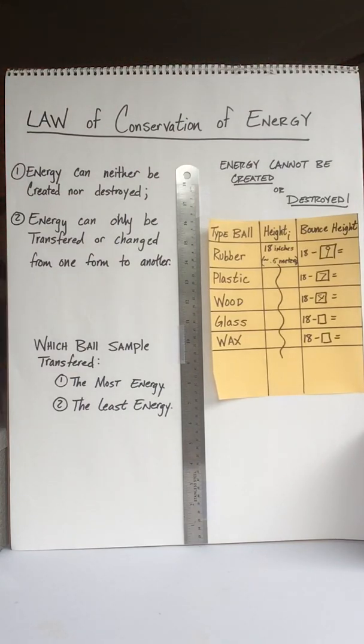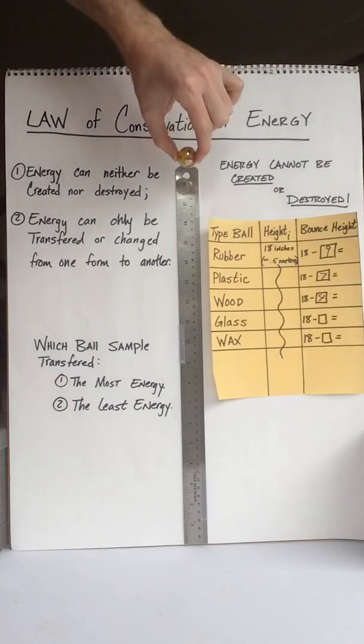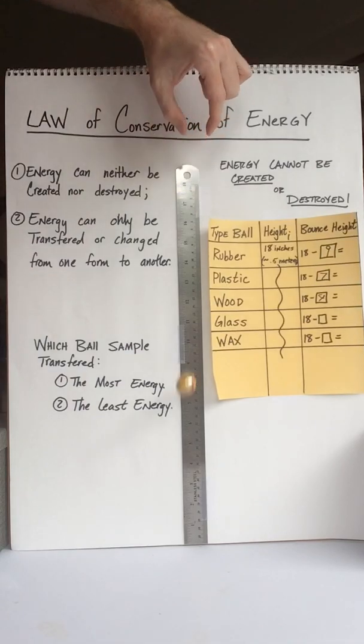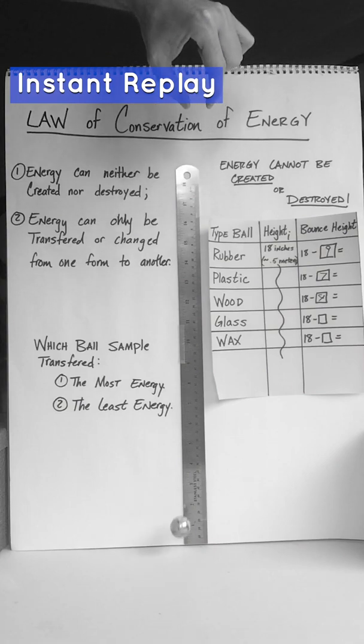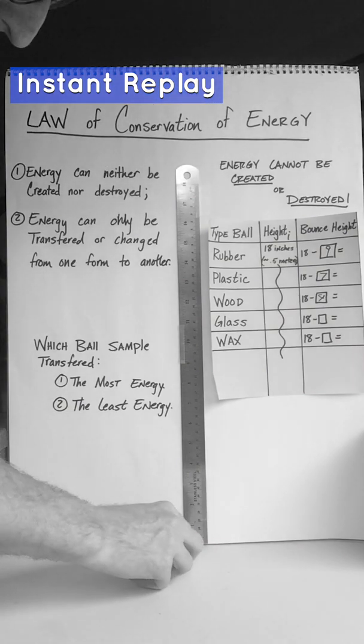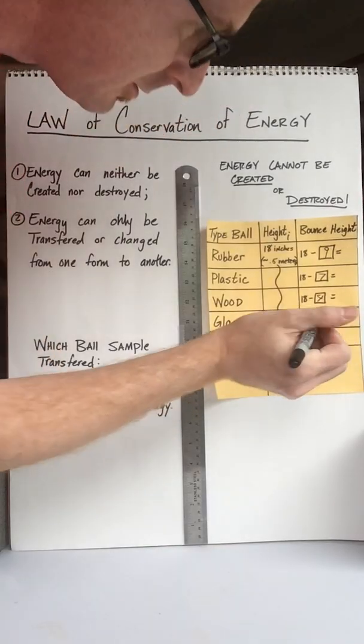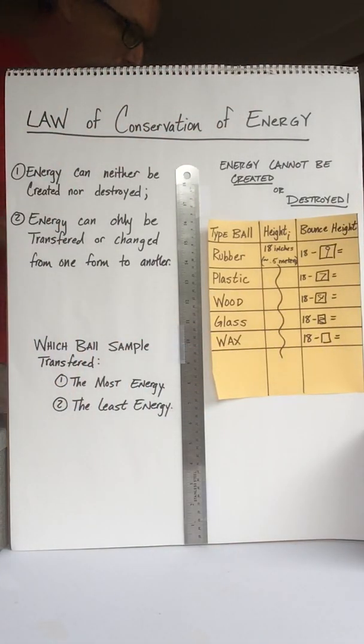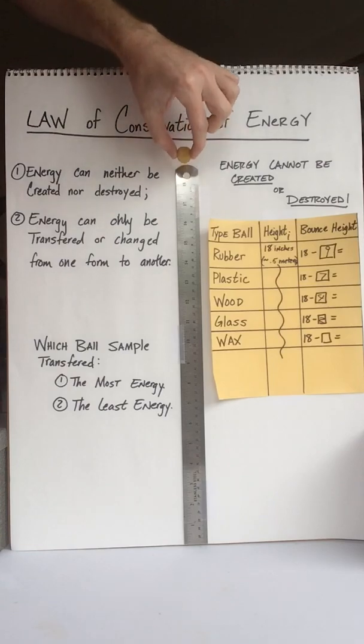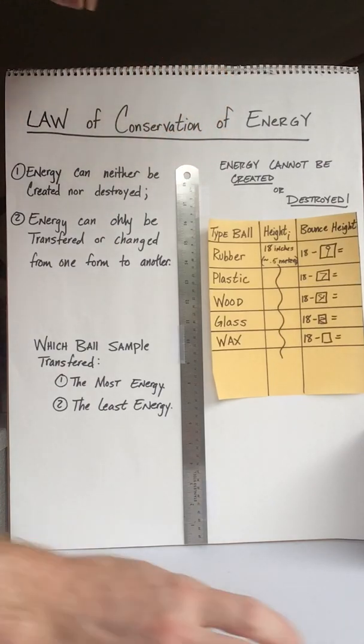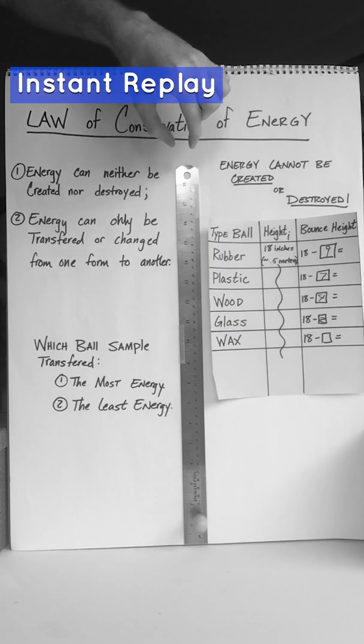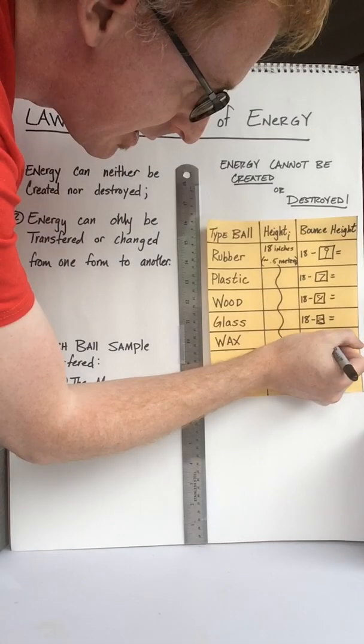Next on our list is the glass marble. Oh that looked to be about two inches at its max height from my angle, maybe a little bit less. And our last is the wax honeybee wax ball. That looked about one and a half, I'll just say one.